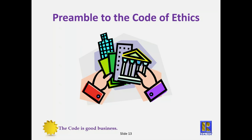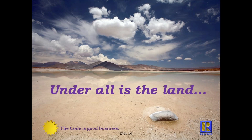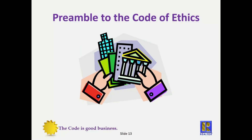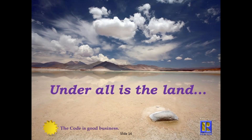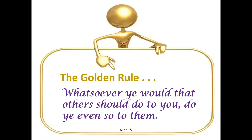At the beginning of the code is the preamble. A key concept is that the preamble to the code establishes ideals for which realtors should strive. Under all is the land. The golden rule is found in the preamble to the code of ethics — that is a key concept. The golden rule is to treat others the way you want to be treated. There is no violation if you don't follow the preamble, because you cannot violate the preamble.